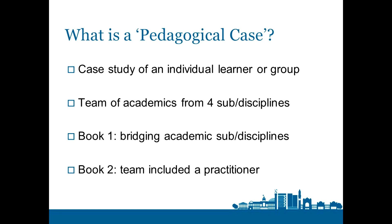The teams came together from their different disciplines and constructed a narrative of a single child — age, gender, background, religion, whatever was felt to be important. All they had to do was work together across their academic sub-disciplines to reflect on the ways their cutting-edge knowledge could illuminate that one single learner. In the second book, we went a step further — a practitioner wrote the narrative based on the ways they were trying to use digital technologies in physical education, and then the team came together and reflected on what was in the case.